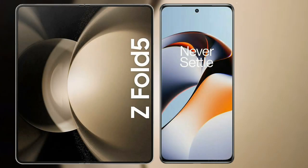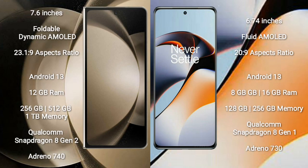I will compare the new Samsung Galaxy Z Fold 5 with OnePlus 11R. Samsung Galaxy Z Fold 5 comes with a 7.6-inch foldable dynamic AMOLED display and aspect ratio 23.1:9. OnePlus 11R comes with a 6.74-inch flat AMOLED display and aspect ratio 23:9.